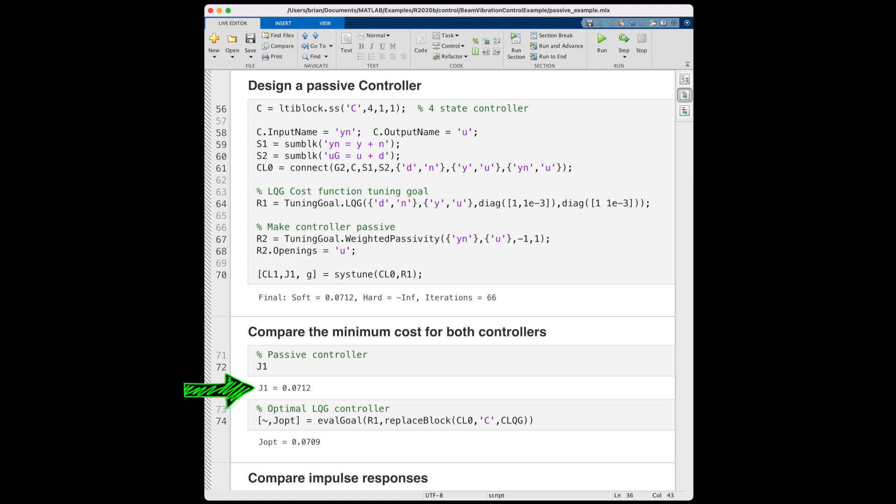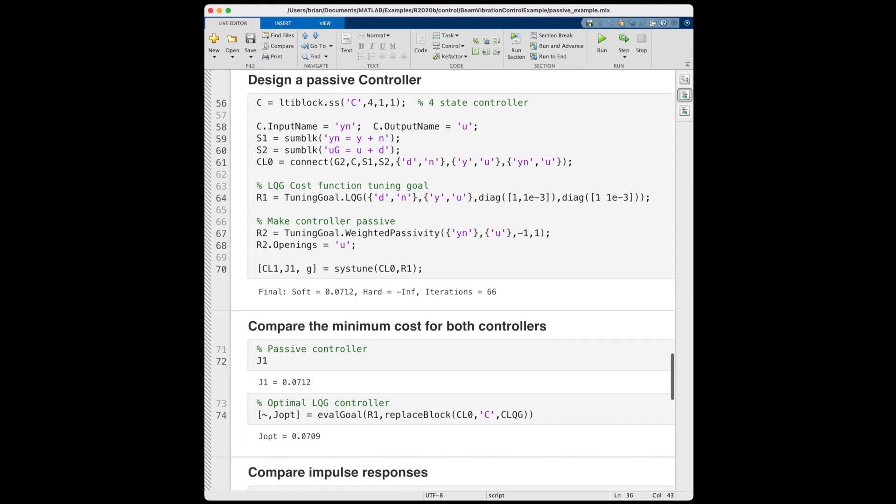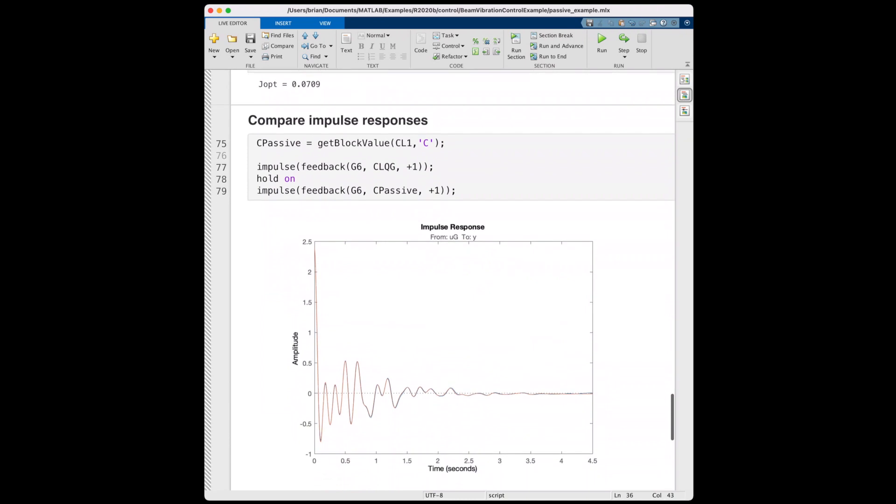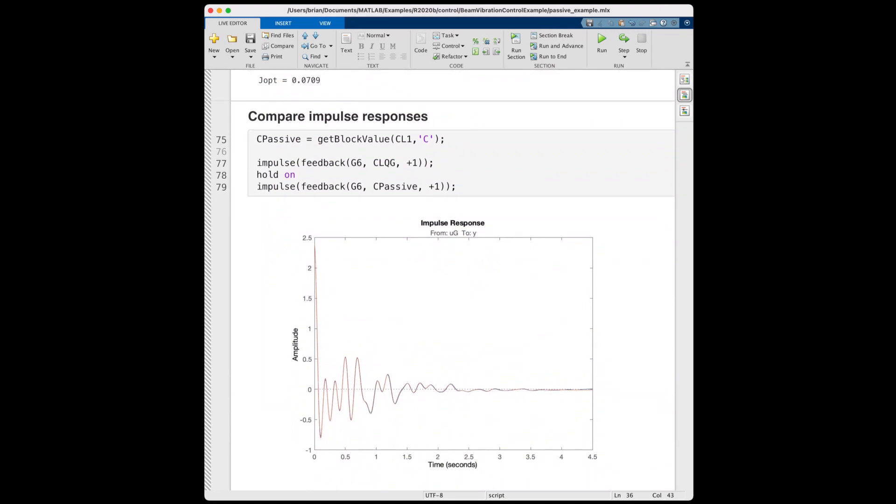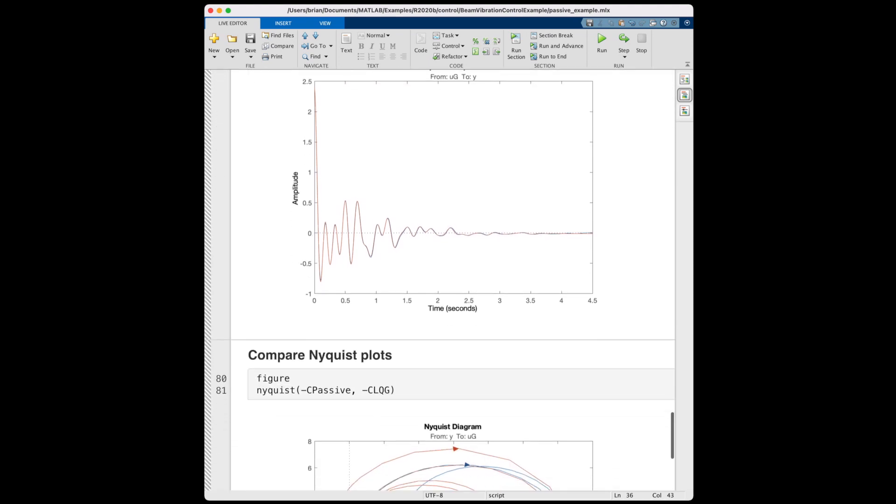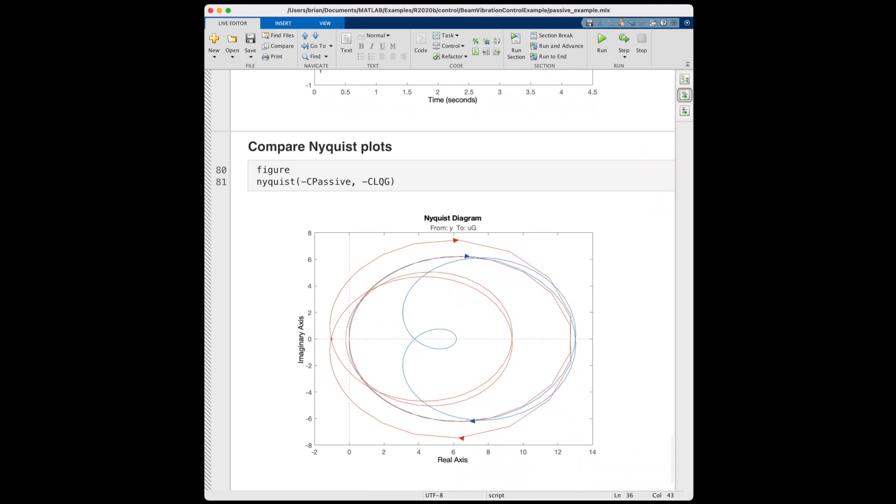Systune returns CL1 which is the tuned closed loop system. If we compare this minimum cost value to what the LQG controller got, you can see that it only increased by much less than 1%. We can see this minimum change in performance by comparing the impulse responses of the two systems. There's hardly any difference at all. And if we check the Nyquist plot for the negative passive controller, you can see that it does lie completely in the positive real half, whereas the LQG one does not.